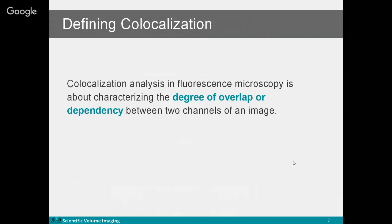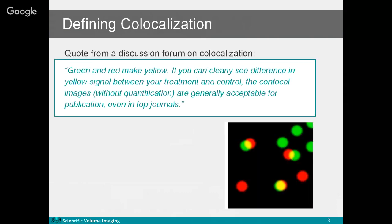Co-localization is about characterizing the degree of overlap or dependency between two channels of an image. A simple way to describe it: green and red make yellow. If you can clearly see a difference in the yellow signal between your treatment and control, confocal images without quantification are generally accepted for publication. The yellow part represents the overlap area we're interested in.